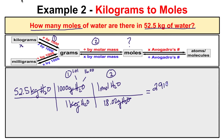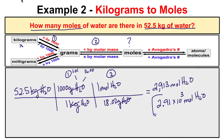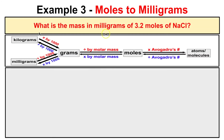We end up with 2,913 moles of H₂O. Putting this in scientific notation with three significant figures gives us 2.91 times 10 to the third moles of H₂O. That is our correct answer. Let's take a look at another example. This problem says: what is the mass in milligrams of 3.2 moles of NaCl?